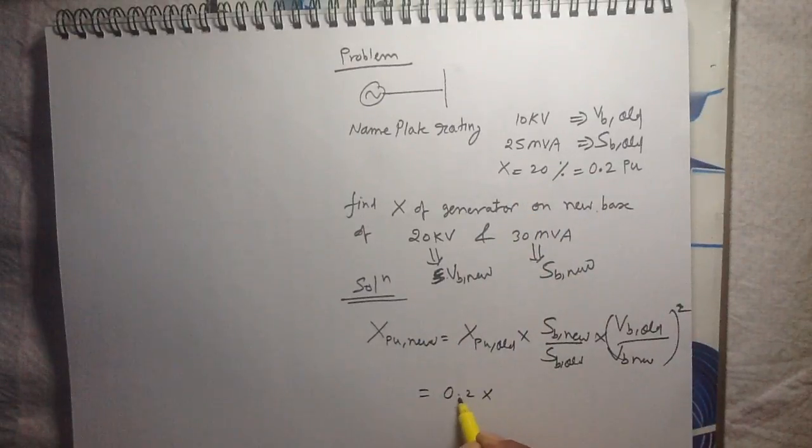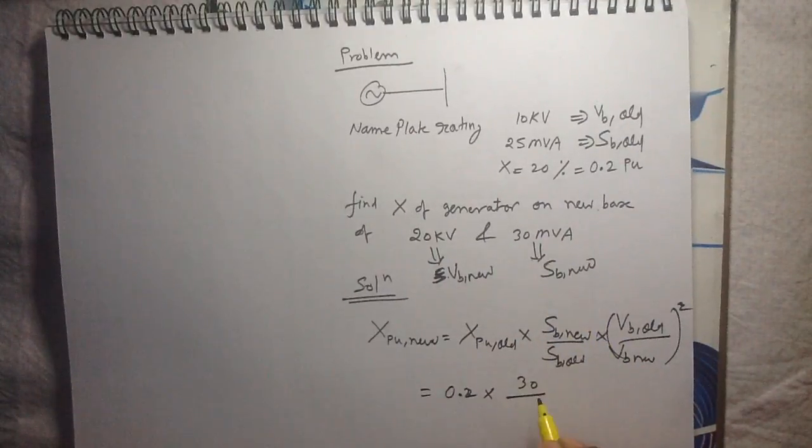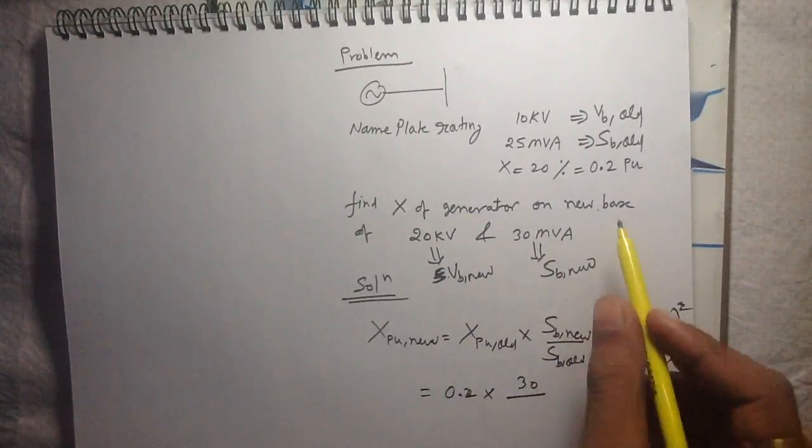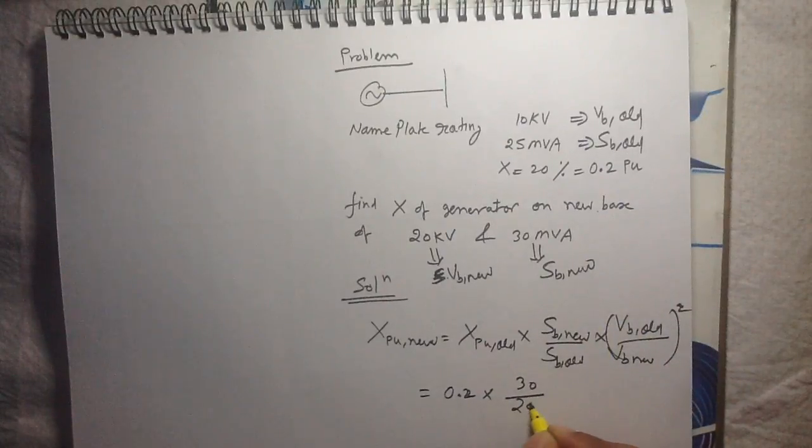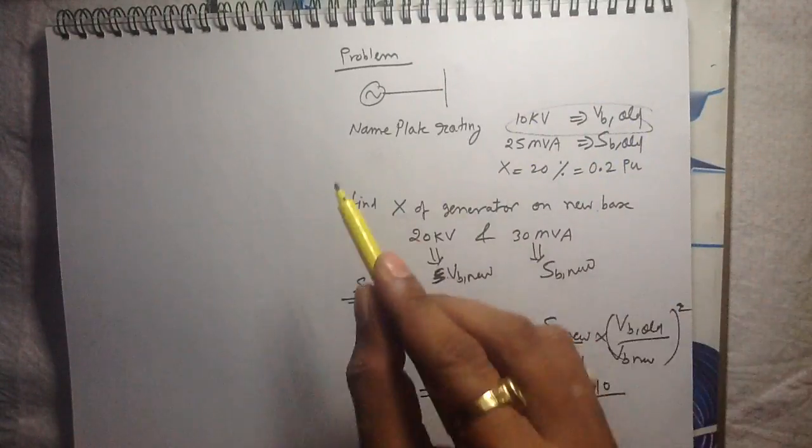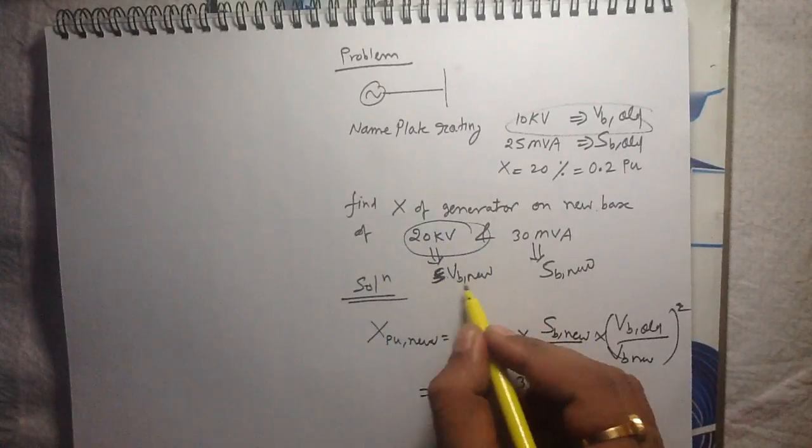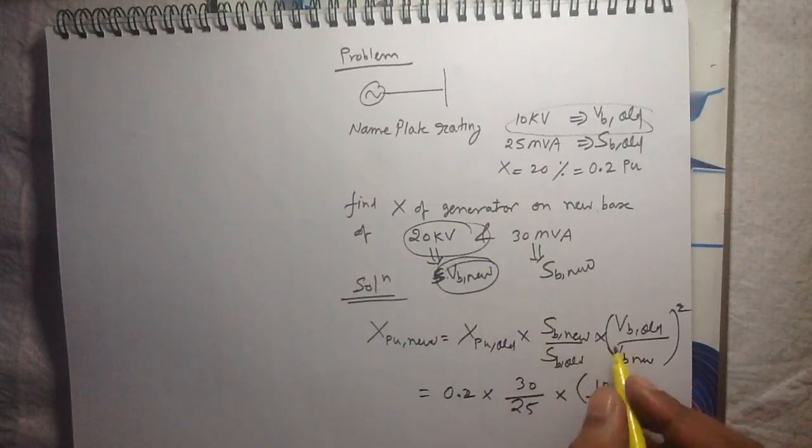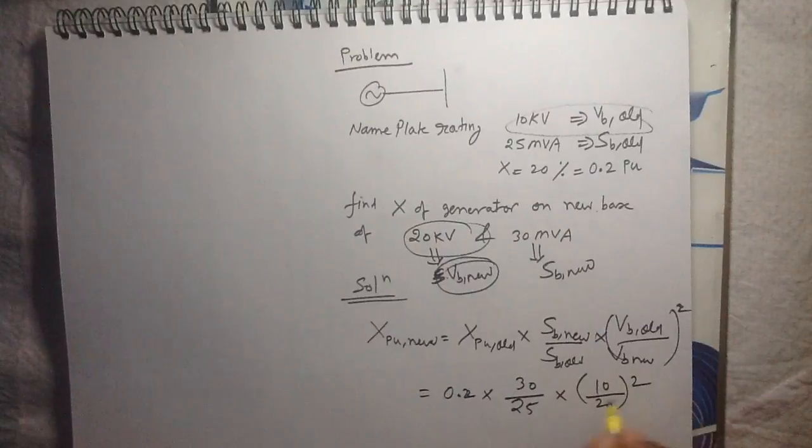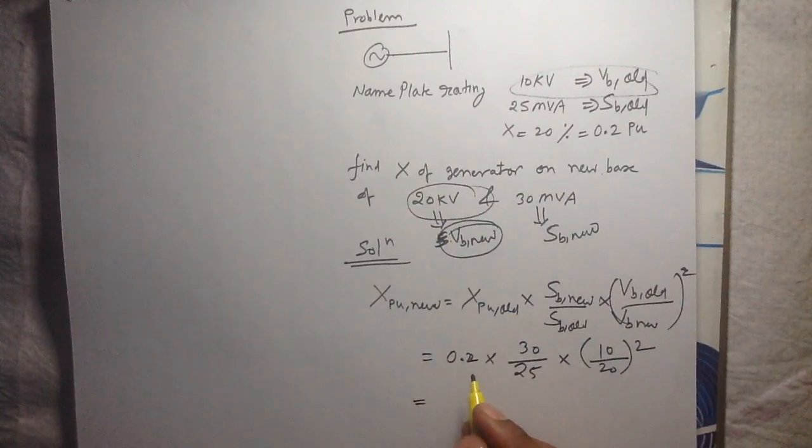The old per unit reactance is 0.2 into the new base power 30, divided by the old base power 25, times the old base voltage 10 divided by the new base voltage 20, whole squared.